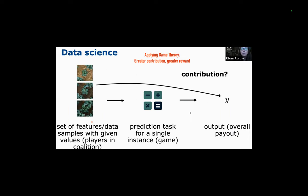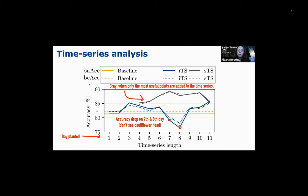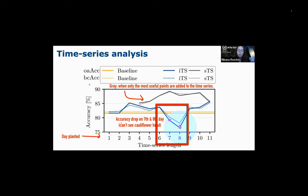The next thing they needed to do is train the network using game theory, such that greater activation contribution to prediction leads to better payout — in other words, the more accurate you are, the more likely you are to be rewarded as a layer in the network. They then plotted this on a time series graph where the x-axis is day planted. This yellow line is the baseline and this blue line is accuracy over time. On the seventh and eighth day there was a drop — maybe it was the weather. This gray line is a graph of when only the most useful points were added to the time series, and you can see it sort of increases and then drops.